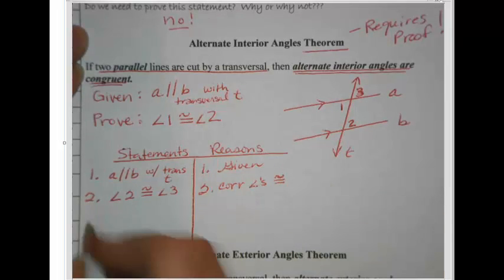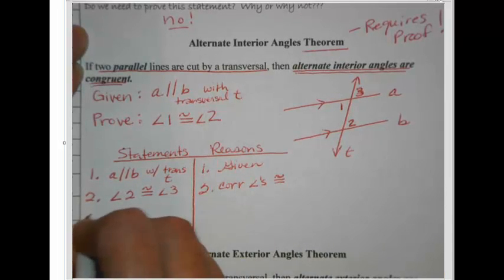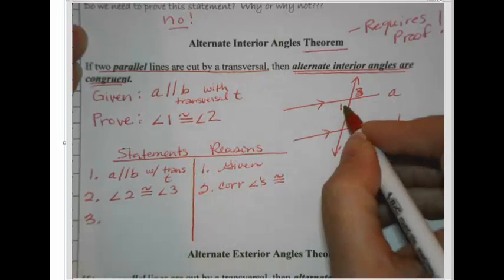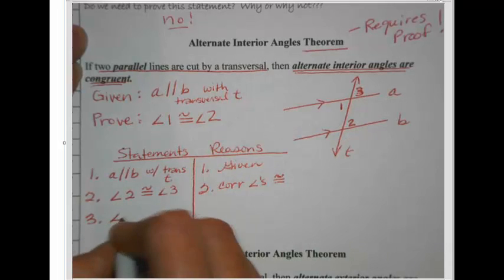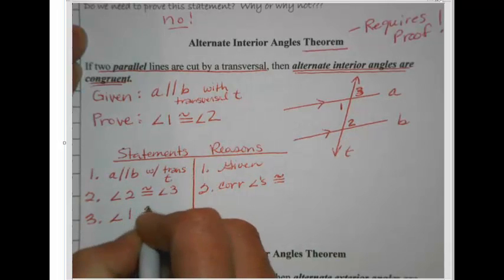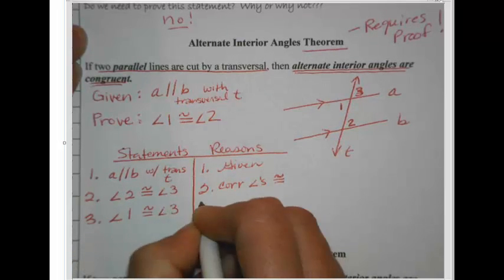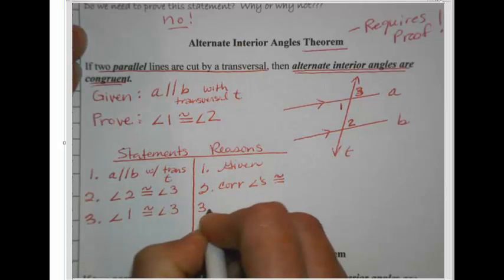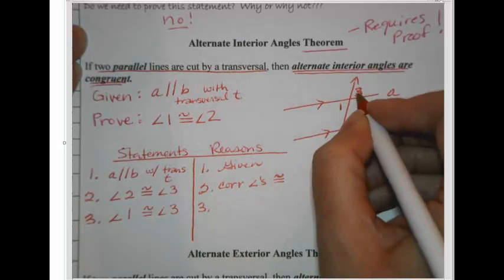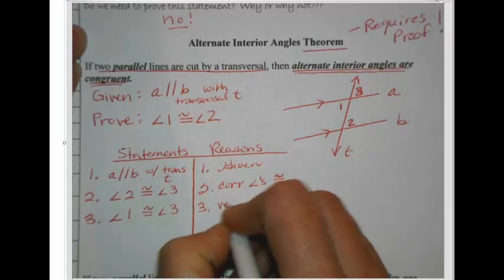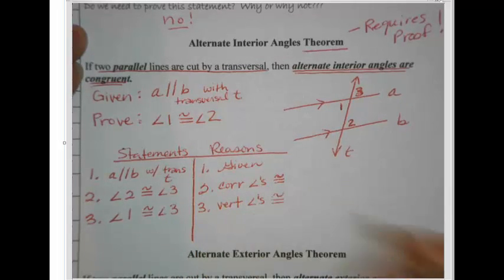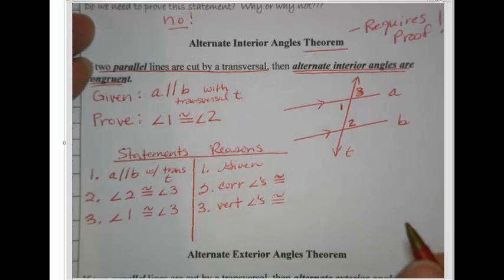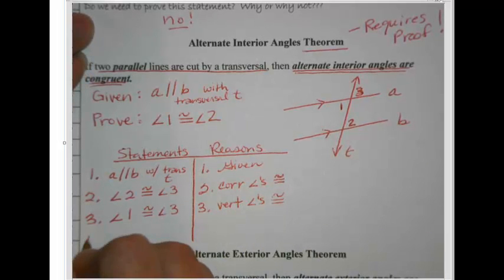Now, if angle 2 is congruent to angle 3, let's talk about angle 1's relationship to angle 3. I know angle 1 is congruent to angle 3 also — that's my next claim: angle 1 is congruent to angle 3. The reason is that those are vertical angles, and vertical angles are congruent. We've already proven that theorem.